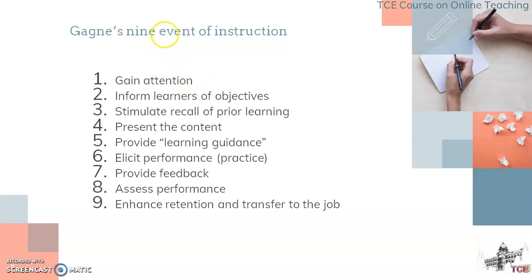The sixth event is elicit performance, that is practice. You have to put practice questions in between the lectures so that learners practice what they have been taught. The seventh step is providing feedback on the practice questions — constructive, immediate feedback should be given. The eighth task is assess performance, which can be a graded assessment. And the ninth is the task to enhance retention and transfer to the job.